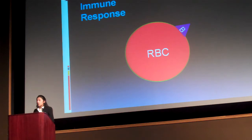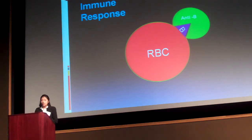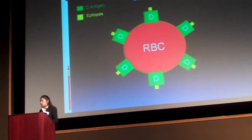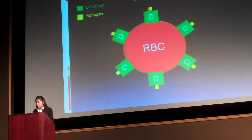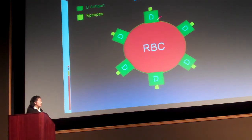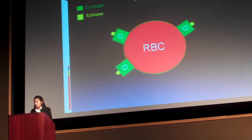An immune response happens when there's a mismatch between donor and recipient blood type. For example, if a person with type A blood receives type B blood, the anti-B antibodies in the recipient's blood will attack the B antigens on the donated blood. The D antigen, also known as the Rh factor, controls the plus or minus of the human blood type. Here are the D antigens on the surface of red blood cells and the epitopes, which connect the antigens to the antibodies to produce an immune reaction. Serological tests may detect a weak D or a partial D as negative instead of positive — with a weak D there are fewer antigens on the red blood cell, and with a partial D there are fewer epitopes.